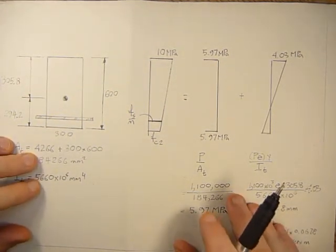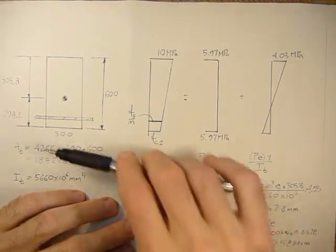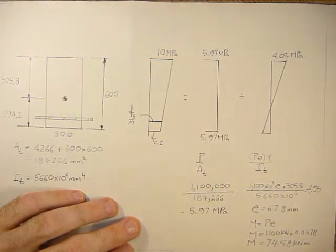We've already solved for a point on the P versus M diagram when the neutral axis is below the base. Let's do one more example.